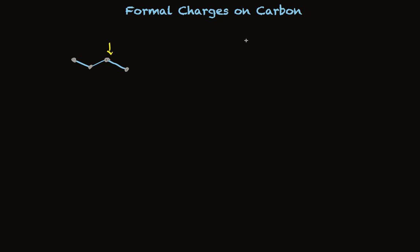You know that we start by looking at the column that the element is in, and carbon is in the fourth column, so we put a four here. We subtract the number of unshared electrons. Well, before we can do that, we better write out the structure exactly. So I'm going to focus on writing out the structure of that carbon.